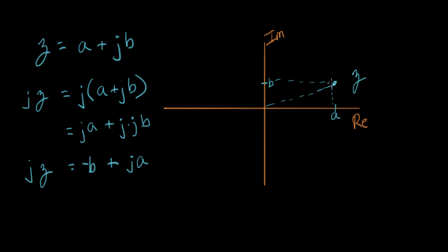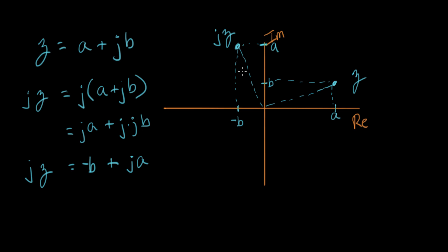That's Z in the complex plane. So now let's put JZ on the same plot. JZ has a real component of minus B, so that would be right about here — here's minus B. And it has an imaginary component of plus A, so let's swing A all the way up to about here. And so that's the location of JZ.